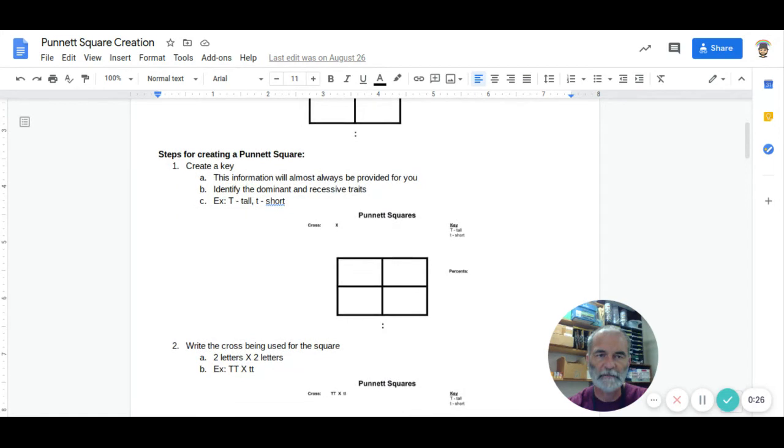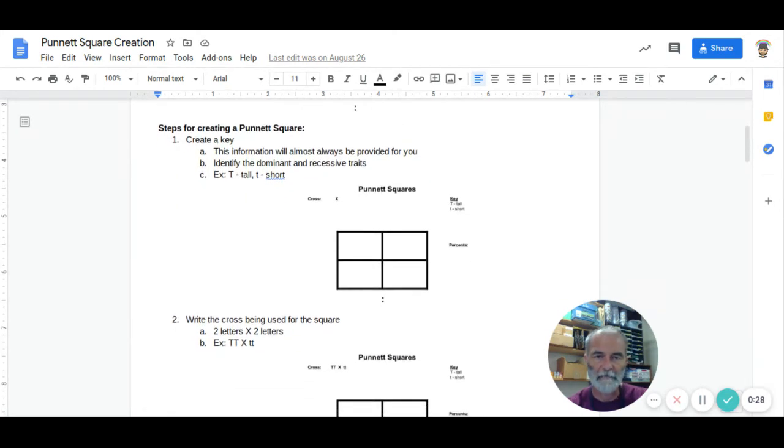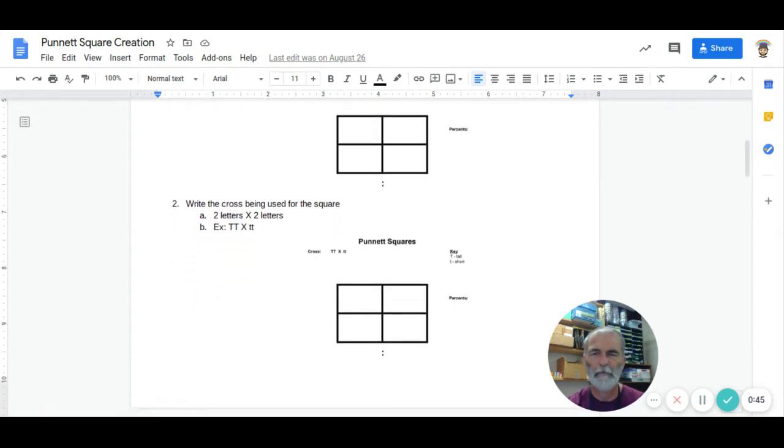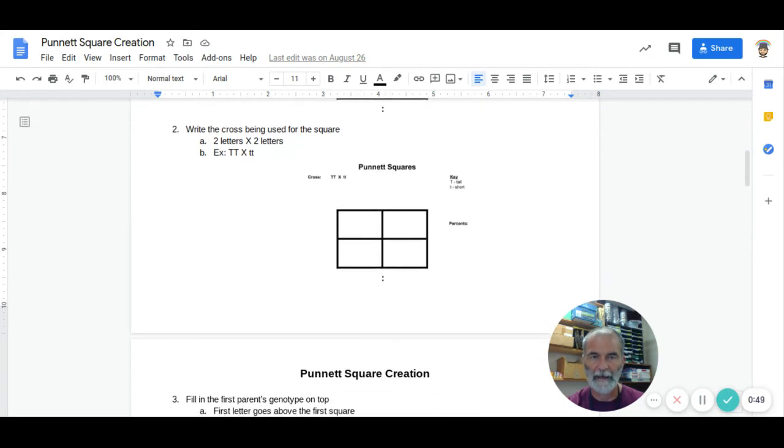Steps for making a Punnett square: First, you create a key. If you see in the picture behind me, there is a key on the right-hand side. It says capital T for tall and lowercase t for short. We're identifying the dominant and recessive traits. That will always be provided for you, so you don't need to worry about how to make a key, just to make it once you're given the information.